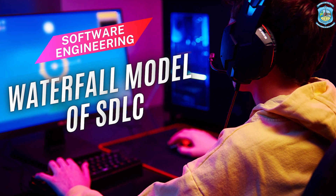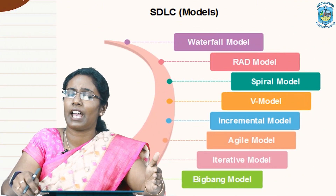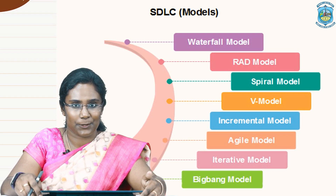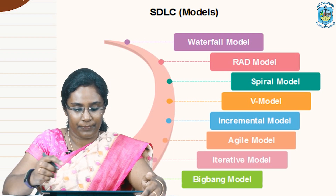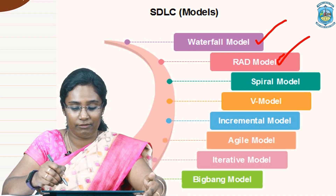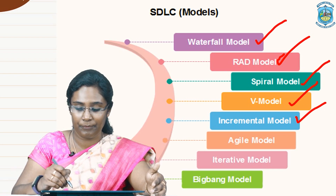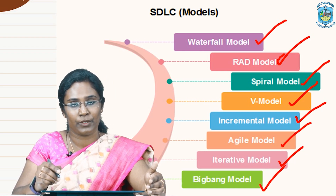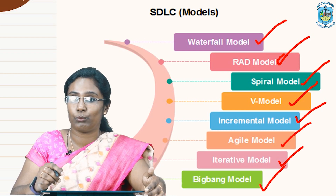As discussed in the previous session, SDLC is a framework that defines different activities which are involved under the software development process. There are different models under SDLC: waterfall model, RAD model which stands for Rapid Application Development, spiral model, V model, incremental model, agile model, iterative model, and big bang model. In this session we are going to discuss the first model, that is the waterfall model.